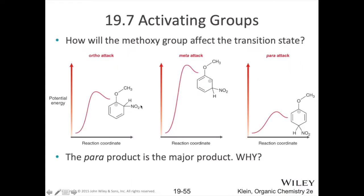Here are those resonance structures for the different sigma complexes we can form by having our new substituent at various positions. Notice with those ortho and para substituents that we have an extra resonance structure due to the involvement of those lone pairs on that oxygen. So we have more resonance stabilization, and we don't have that available with our new group at the meta position — the sigma complex skips over the carbon where our methoxy group is attached, so those lone pairs in that oxygen can't get involved. Just like before with our methyl group, notice the difference in activation energy — it's not that the meta complex is raised in activation energy, but rather that the ortho and para ones are lowered, and that's what drives the reaction towards those products.